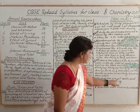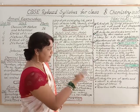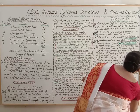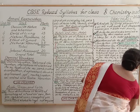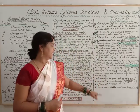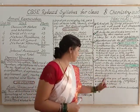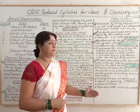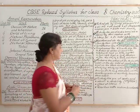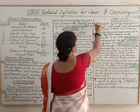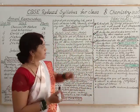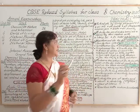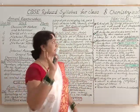Practical 5: To study the properties of acetic acid (ethanoic acid, CH₃COOH) — odour, solubility in water, effect on litmus paper, and reaction with sodium bicarbonate. All four properties were to be studied, but this practical has been deleted for this session.